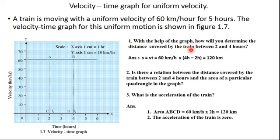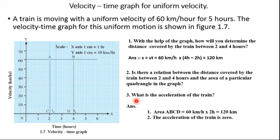So the distance covered by the train between 2 to 4 hours is 120 kilometers. The second question is: is there any relation between the distance covered and the area of the perpendicular quadrilateral in the graph? The area of quadrilateral ABCD = 60 kilometers per hour × 2 hours = 120 kilometers — the same answer.